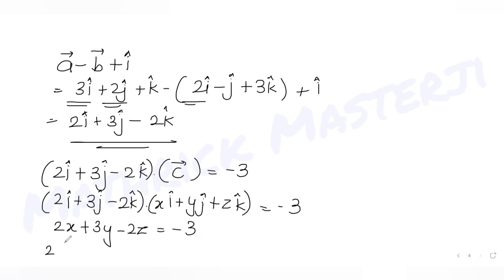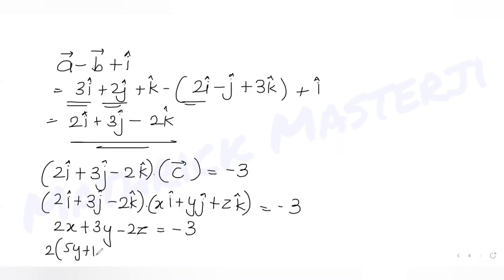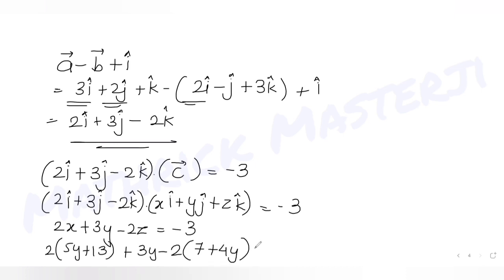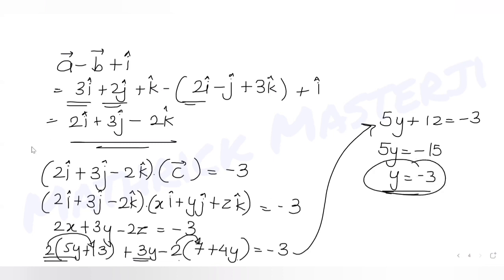Substituting x = 5y + 13 and z = 7 + 4y into 2x + 3y − 2z = −3: we get 2(5y + 13) + 3y − 2(7 + 4y) = −3, which simplifies to 10y + 26 + 3y − 14 − 8y = −3, giving 5y + 12 = −3, so 5y = −15, and therefore y = −3.